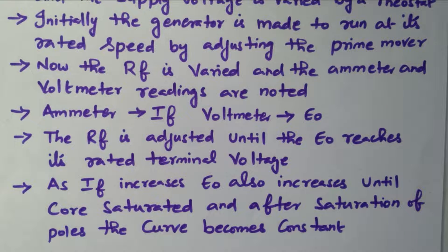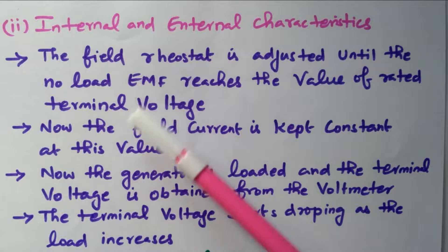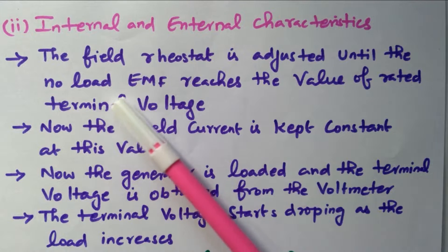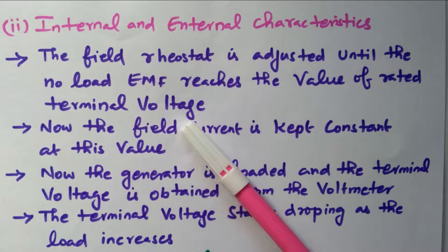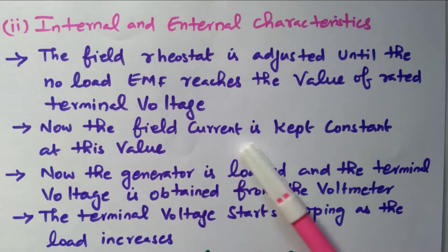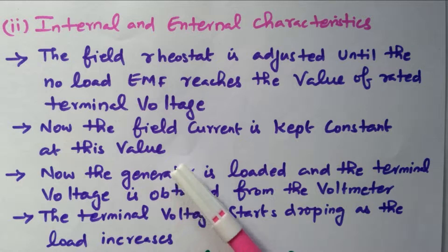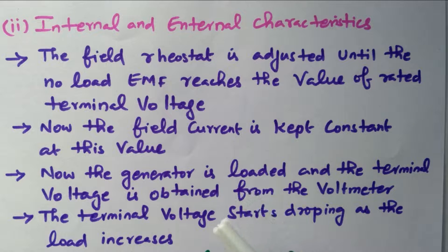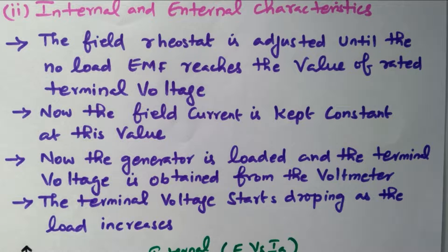For the internal and external characteristics, the field rheostat is adjusted until the no-load EMF reaches the rated terminal voltage. After that, the field current is kept constant. Now the generator is loaded — internal and external characteristics are loaded characteristics. The terminal voltage is obtained from the voltmeter. The terminal voltage starts dropping as the load increases; under no-load it is constant, but once loaded, the terminal voltage keeps decreasing as load increases.